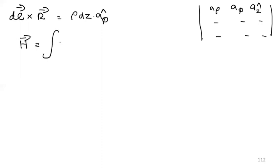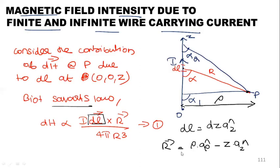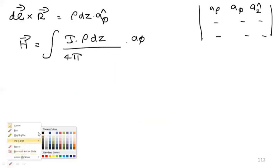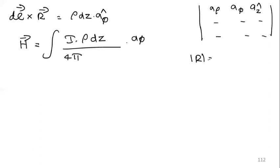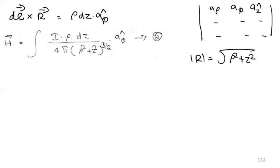Now H = ∫dH = ∫ i·(dl × r) / (4π r³). Substituting dl × r = ρ·dz·aφ, we get H = ∫ i·ρ·dz·aφ / (4π r³). The modulus of r is √(ρ² + z²), so r³ = (ρ² + z²)^(3/2).